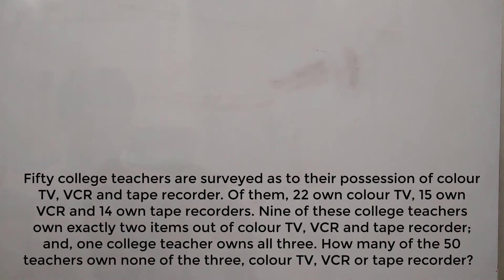50 college teachers are surveyed as to their possession of color TV, VCR and tape recorder. Of them, 22 own color TV, 15 own VCR and 14 own tape recorder. 9 of these college teachers own exactly 2 items out of color TV, VCR and tape recorder, and 1 college teacher owns all 3. So this is a very clear case of Venn diagram where we have 3 items.